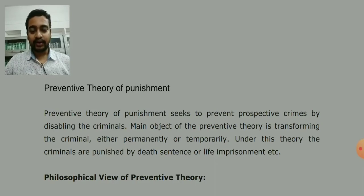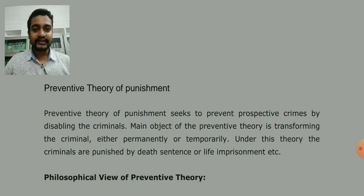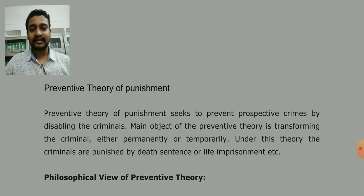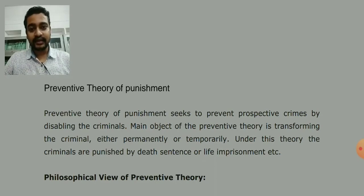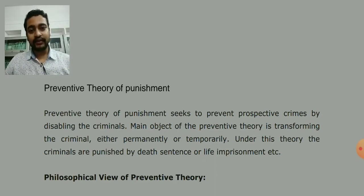And permanently, how can we prevent crime? Through death sentences or life imprisonment — we permanently remove the criminal from society. This is what is called the Preventive Theory of Punishment.